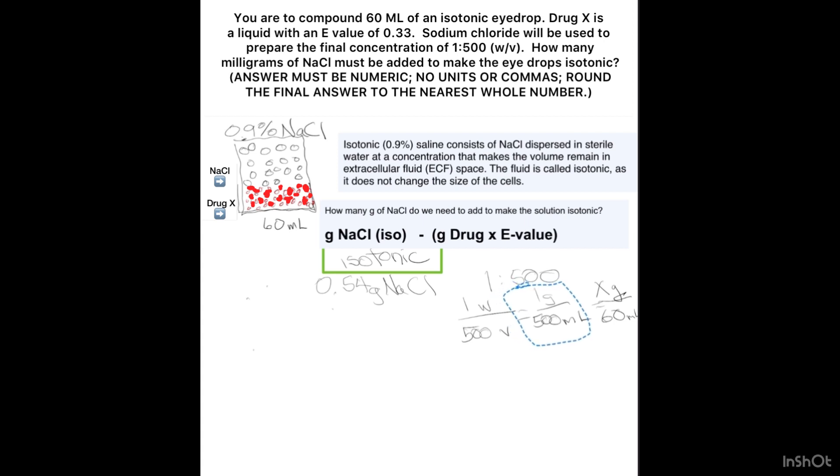So basically what this is saying is our final concentration of 1 to 500 would get us how many grams of drug in this 60 mL solution. That gets me 0.12, 0.12 grams of drug.